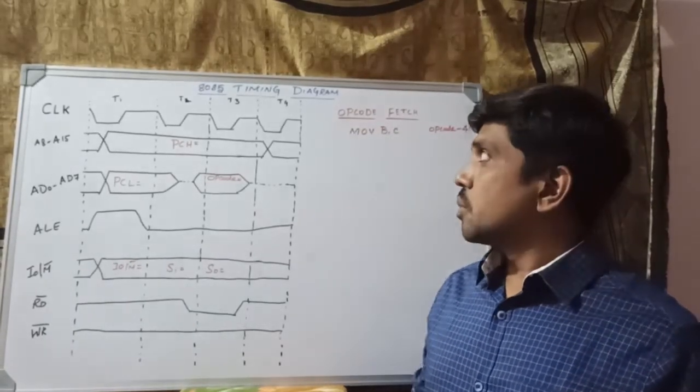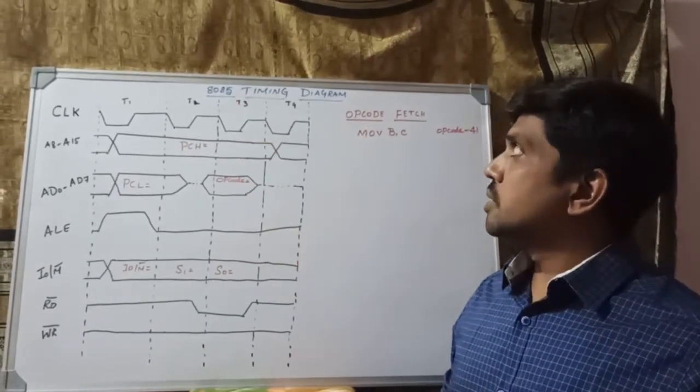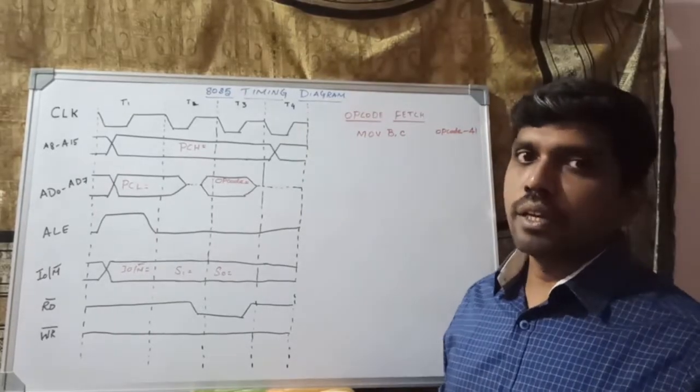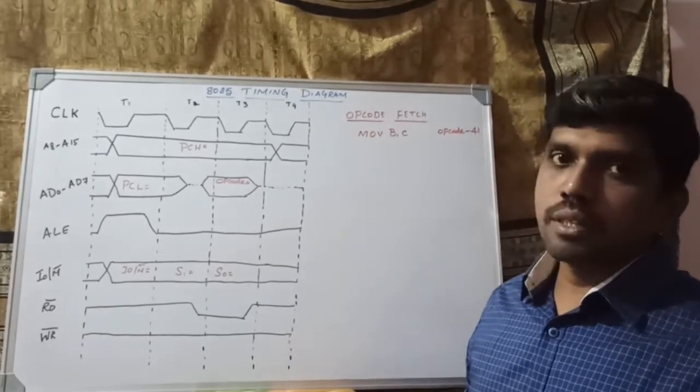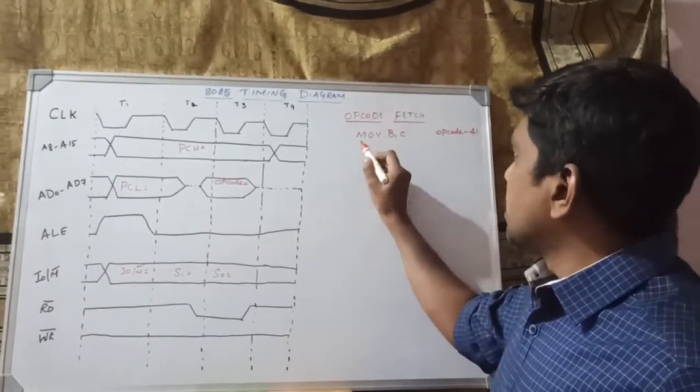Welcome to our channel. Today's session we are going to discuss about the 8085 timing diagram. We will consider one example: MOV B, C.